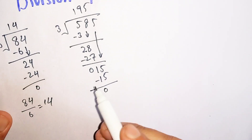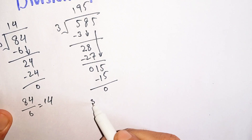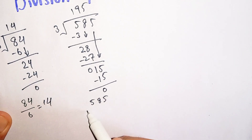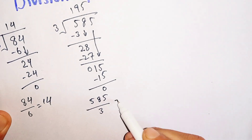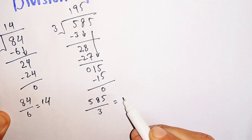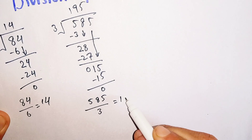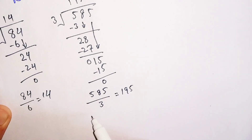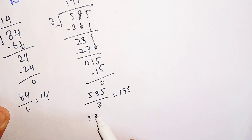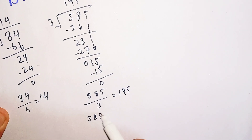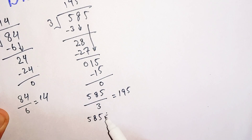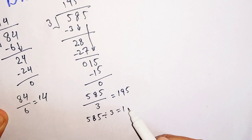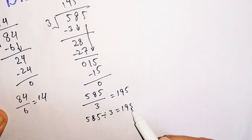So we can say that 585 divided by 3 is equal to 195.